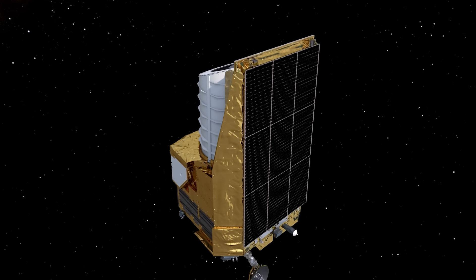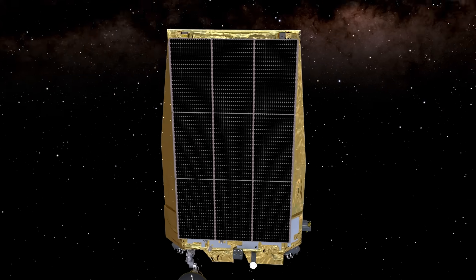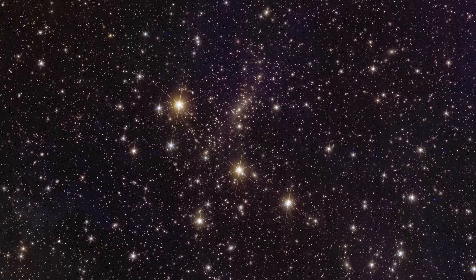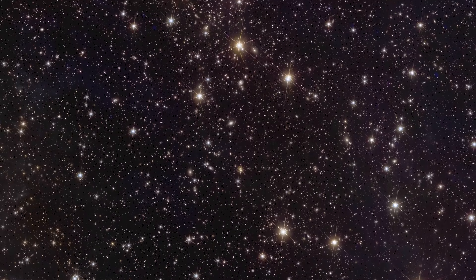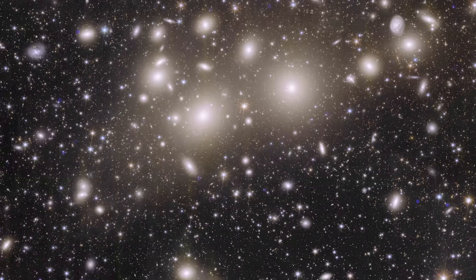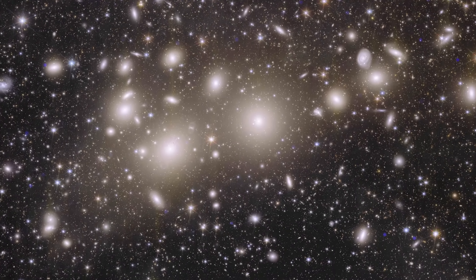In just one week, the European Space Agency's Euclid Telescope has imaged over 26 million galaxies, some more than 10 billion years old. The clarity of Euclid's deep field is astonishing.